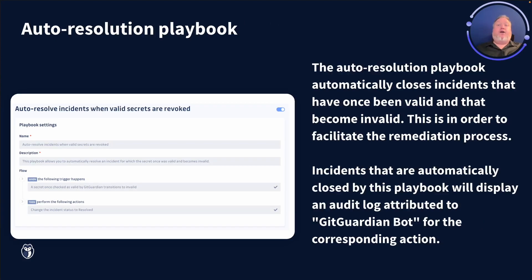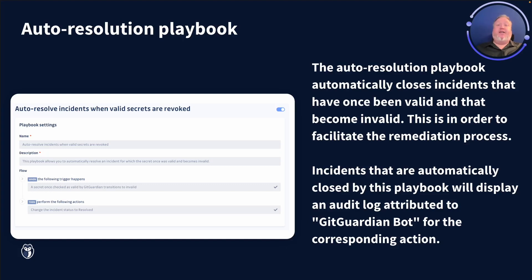Finally, we offer the auto-resolution playbook. This playbook automatically closes incidents that contain credentials that have been marked as invalid. The GitGuardian platform checks the validity of many types of keys and therefore can automate the closing of any incident arising from invalid keys in your code. They'll still be in the code base, but since they're invalid, you can choose to no longer manually deal with these occurrences in the dashboard. This can be especially useful if performing historical scans after you've rotated keys.